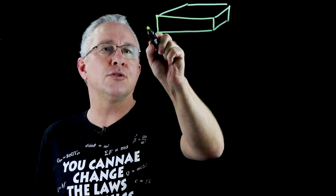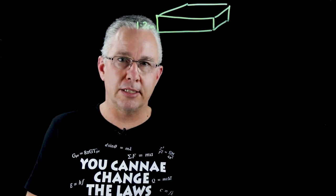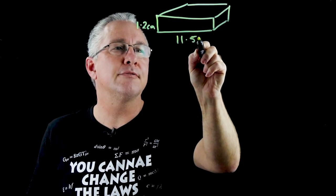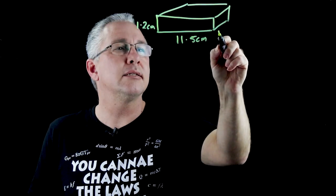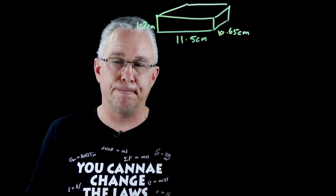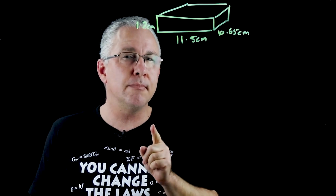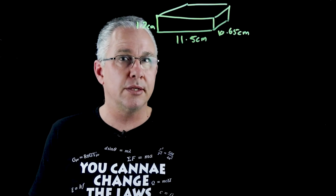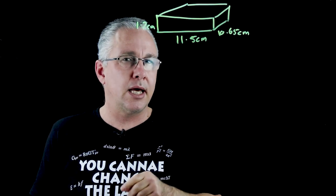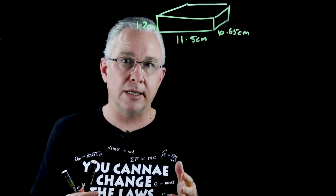And so the students give these values. They say it's 1.2 centimeters high like so, 11.5 centimeters across there and 10.65 centimeters there. Now I have a question for you. Which of the three measurements is the most precise and which is the least precise? Now I'm guessing that you're probably thinking probably this one. Let's explore that a little bit more.